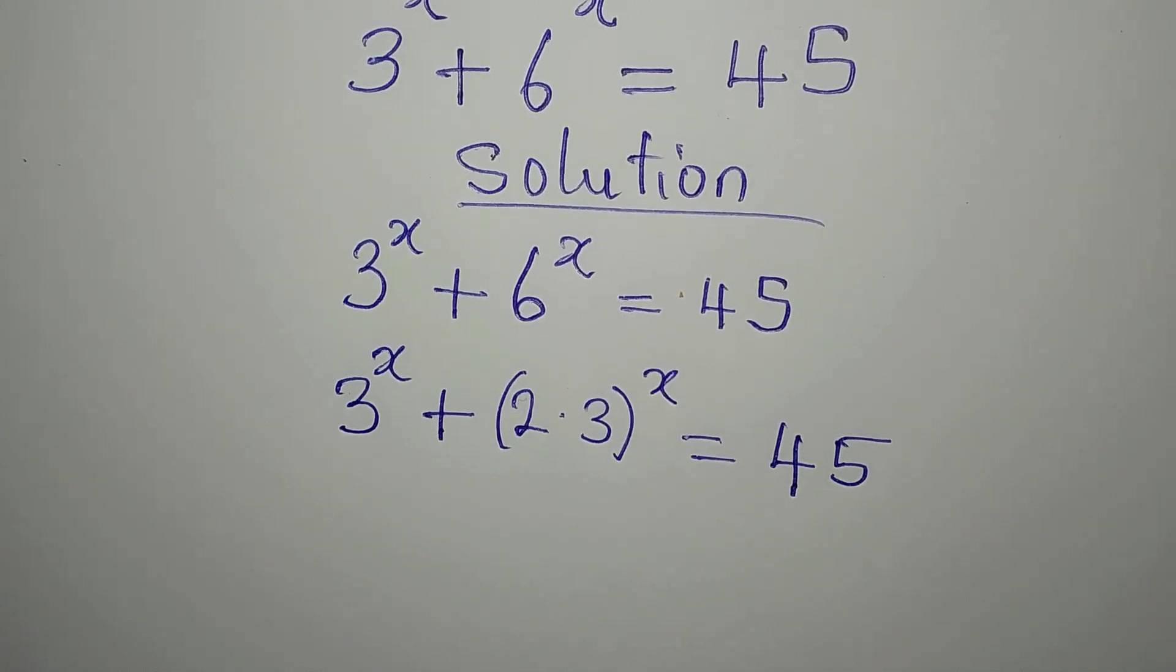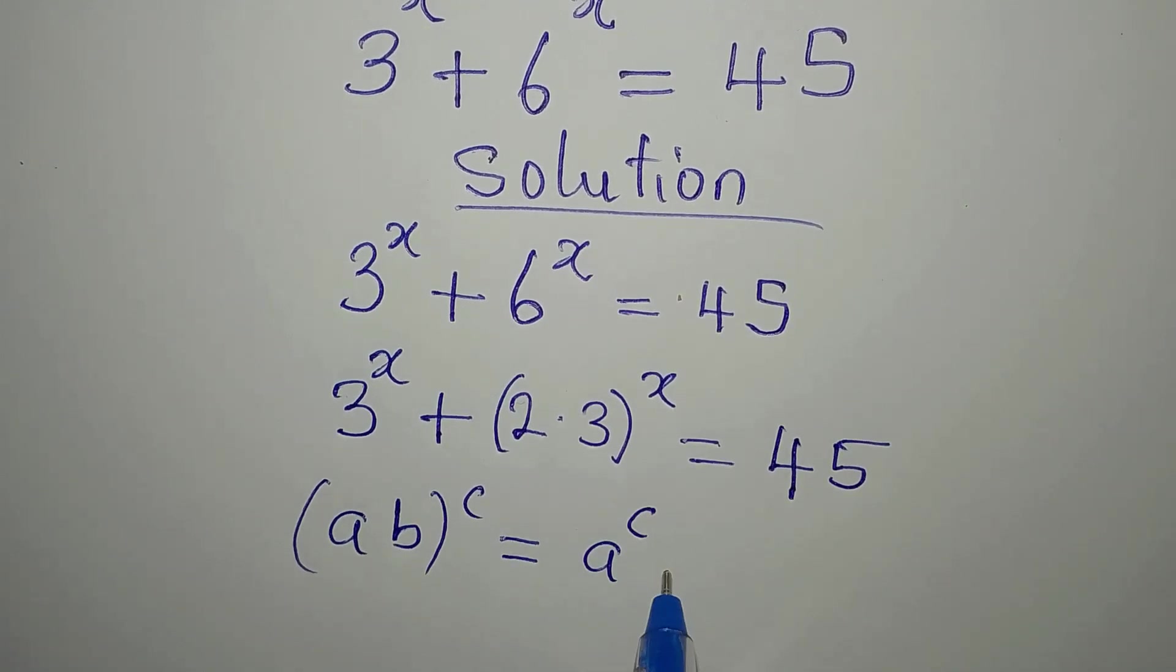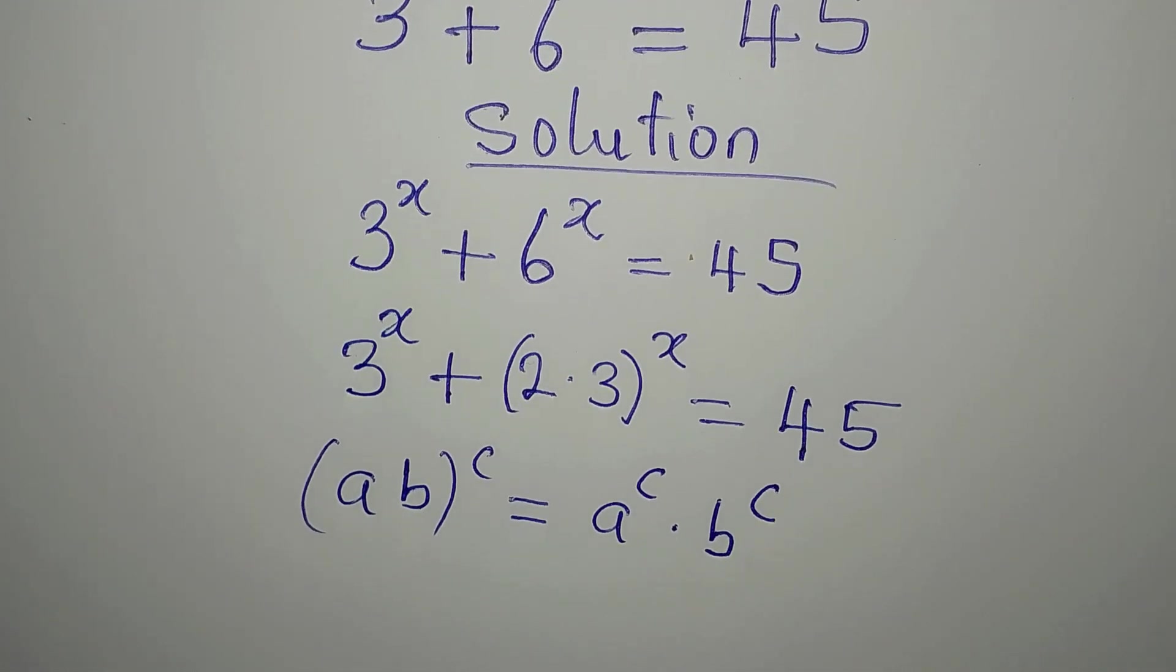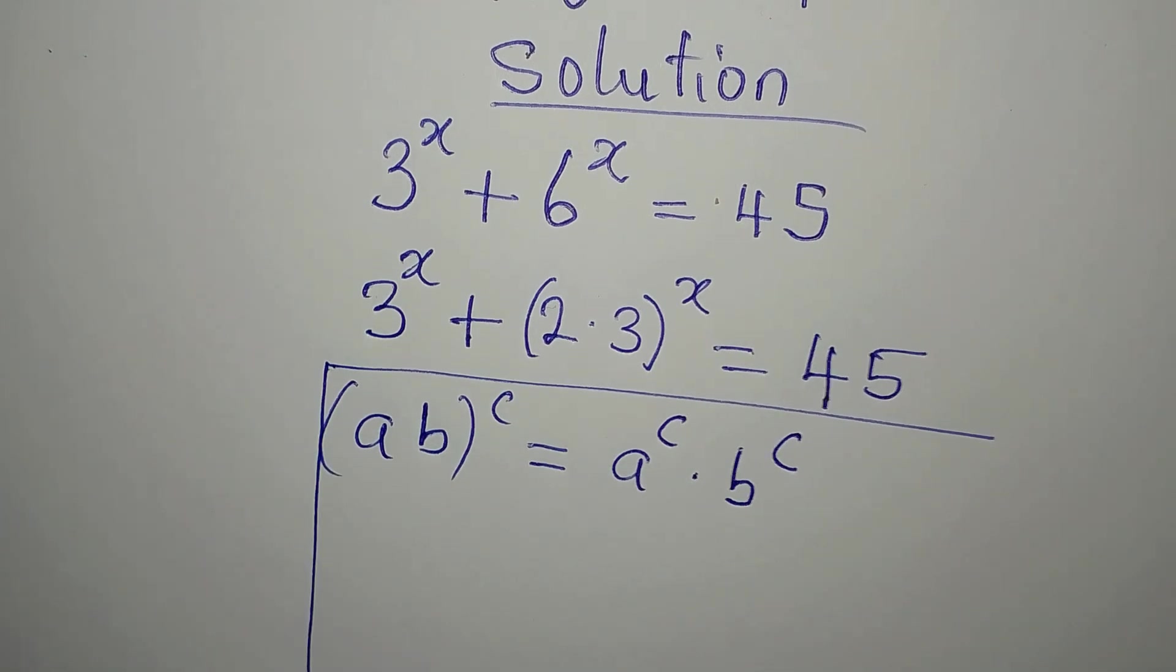Now, look at this. If you have found ab to the power of c, this is the same thing as a to the power of c multiplied by b to the power of c. Now, let's use numbers to explain this.